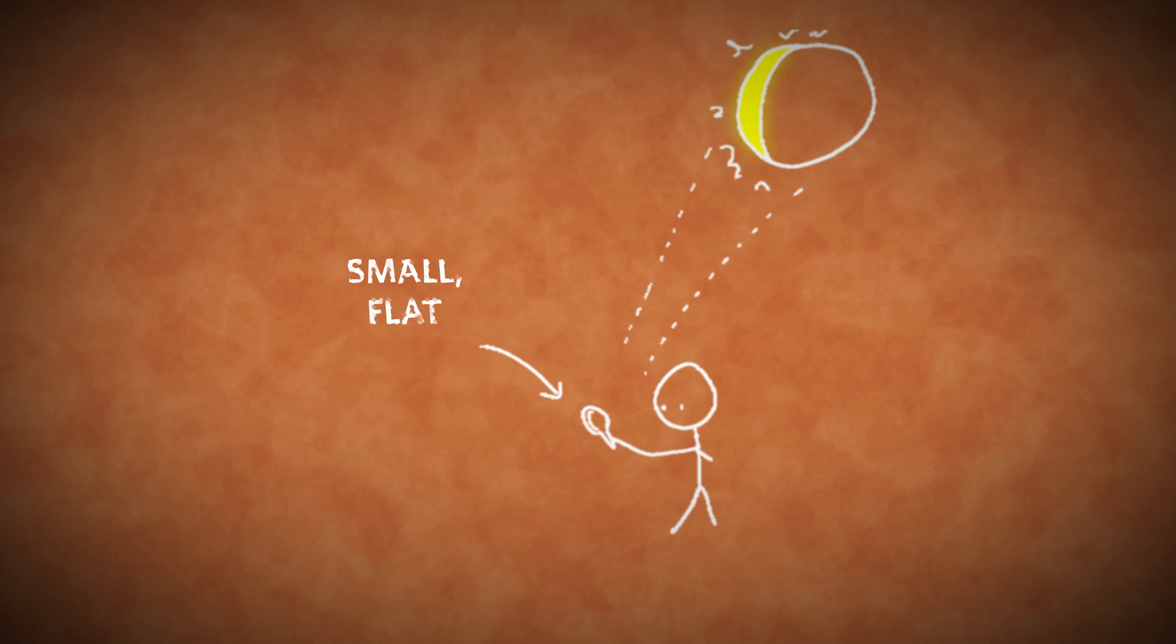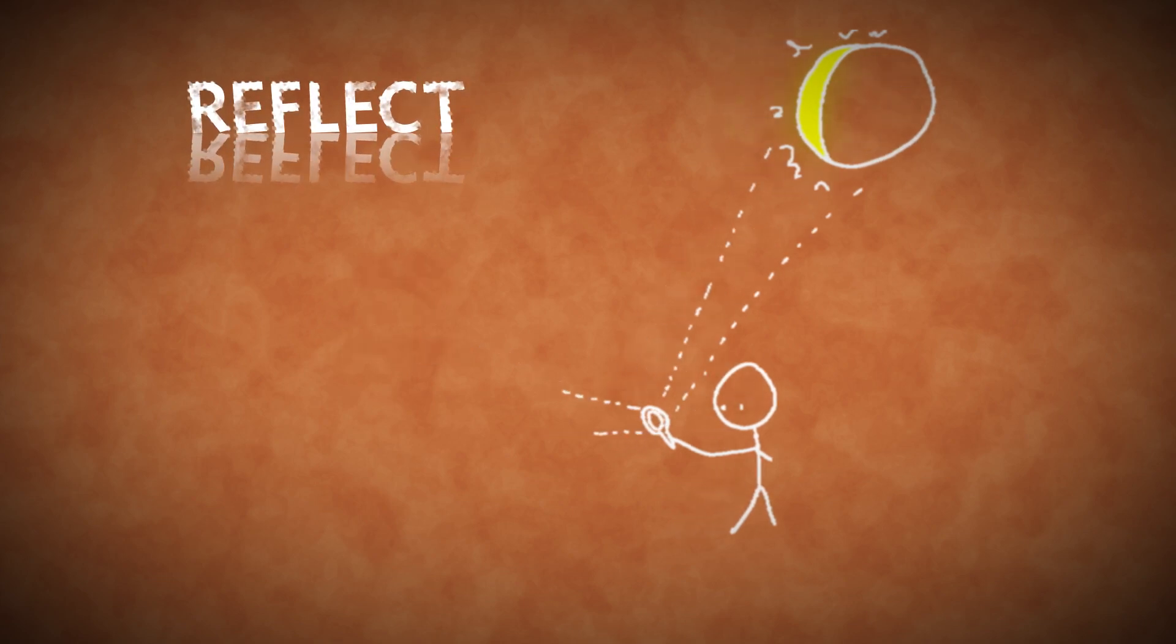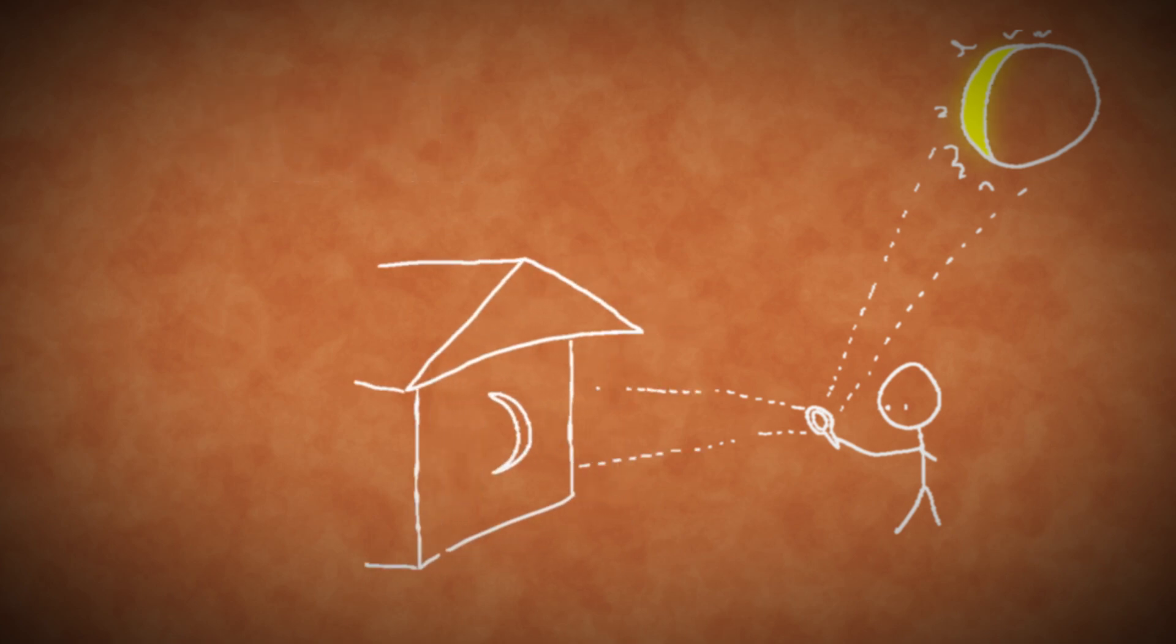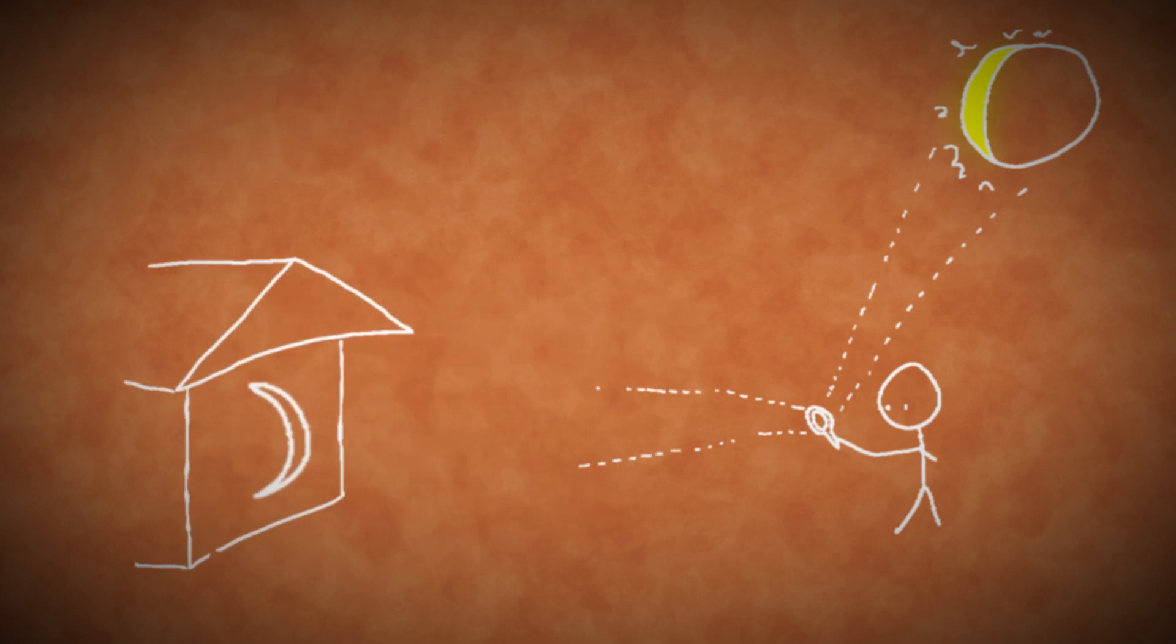You can also use a small, flat mirror to reflect a low-resolution image of the sun onto a shaded surface, such as the side of a building. The farther away the building is, the larger the sun's image will be.